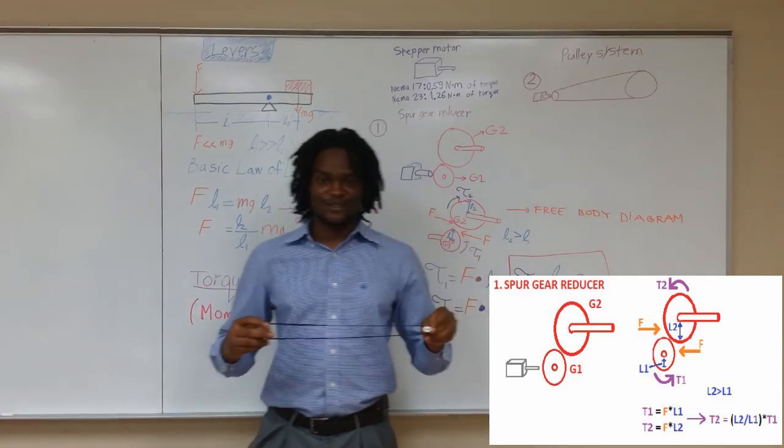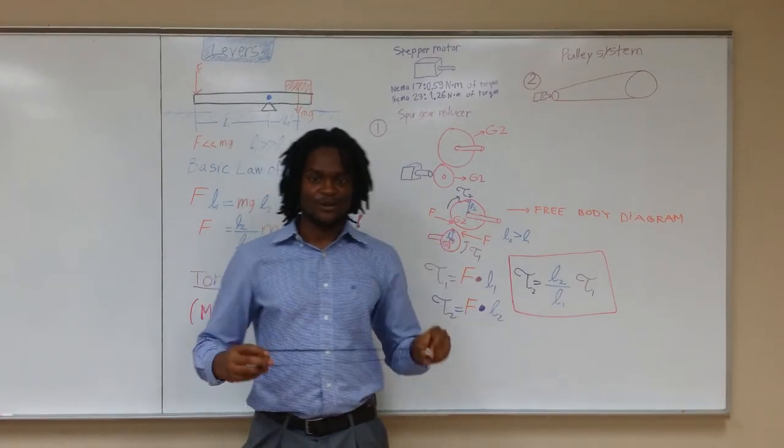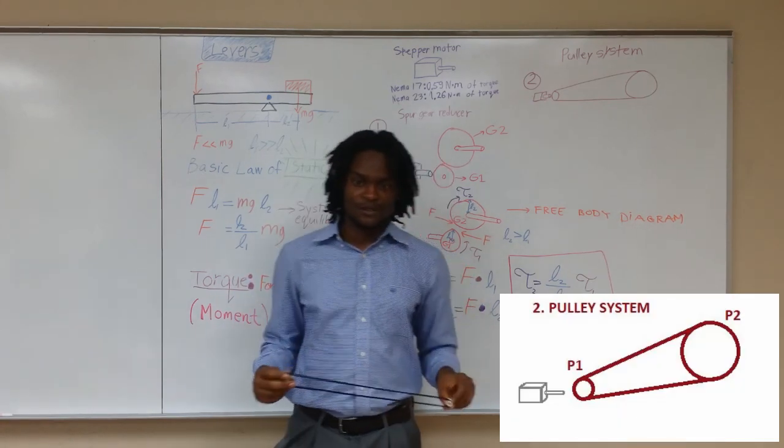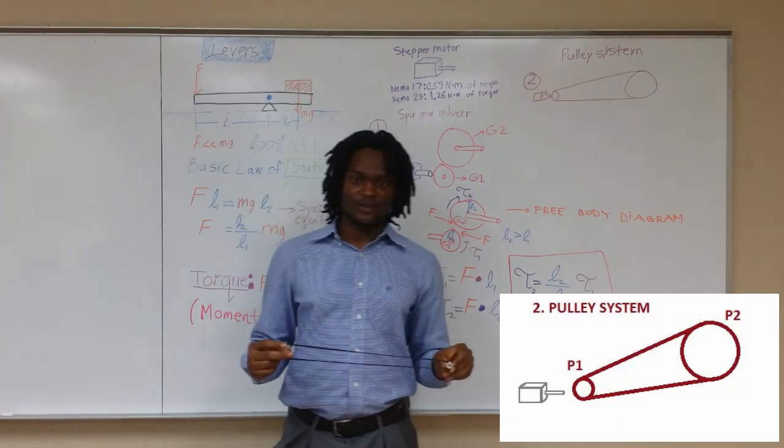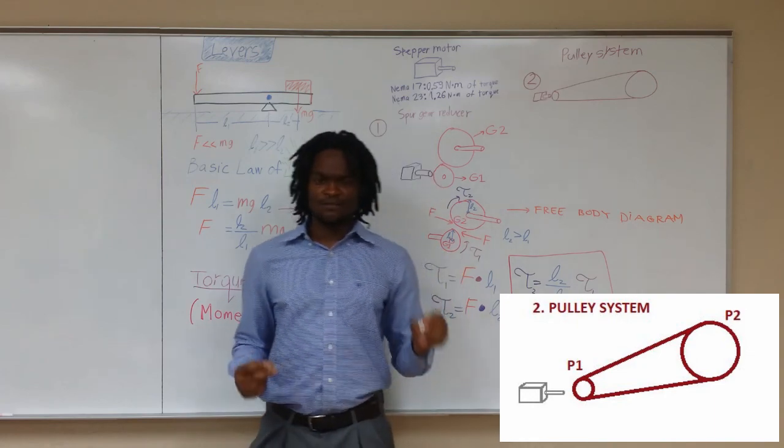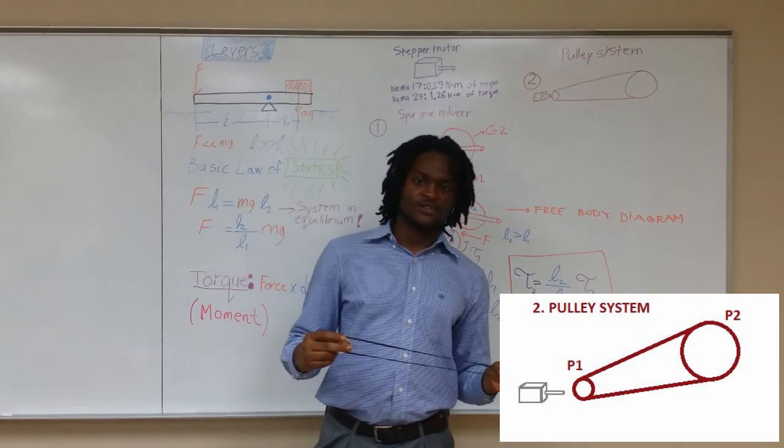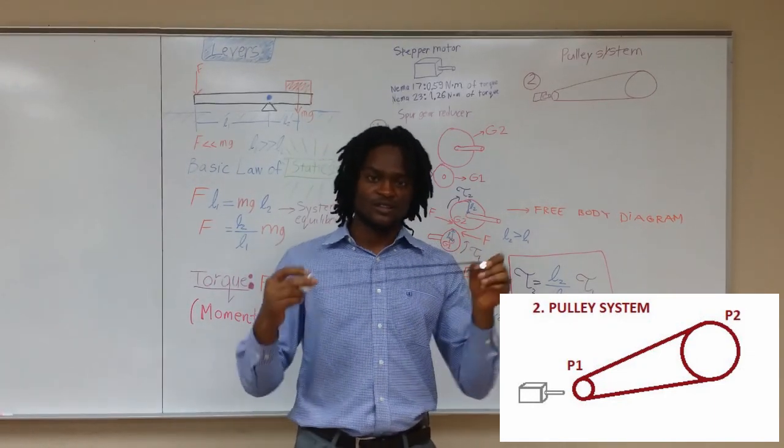Another method is the pulley system, where we have a smaller pulley on the motor and a larger pulley on the bow. Using the same principle from the spur gears, this method is effective. The pulley system has an advantage over the spur gear reducer system since the torque is amplified over a long distance.